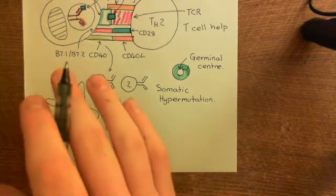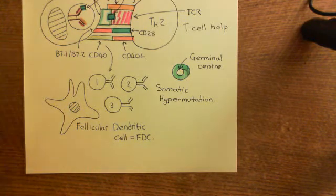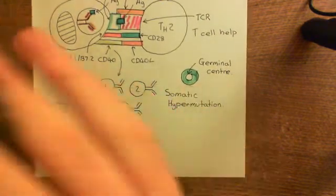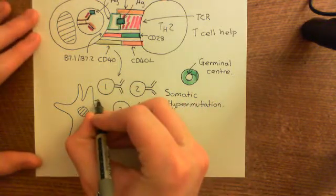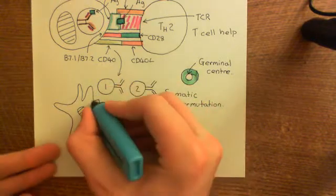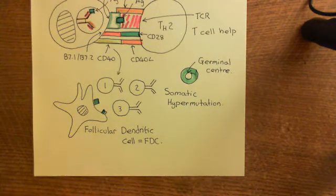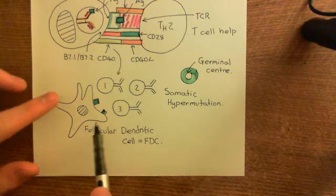They will grab onto some of the antigen molecules that we are specifically launching this immune response against — specifically the antigen we've been working with from the beginning. Some of this antigen will remain bound on the surface of the follicular dendritic cells in blue. So we're studying the humoral immune response to this blue antigen, and some blue antigen will remain bound to the follicular dendritic cells.